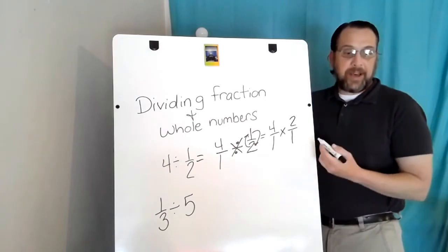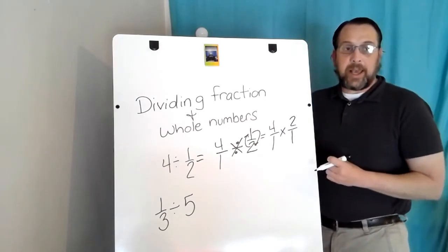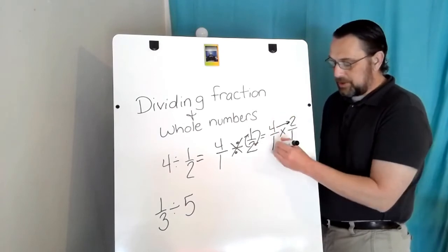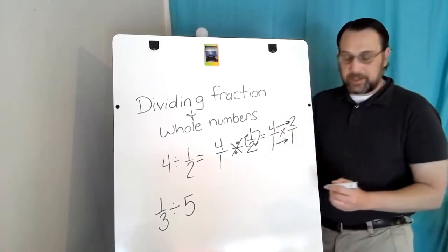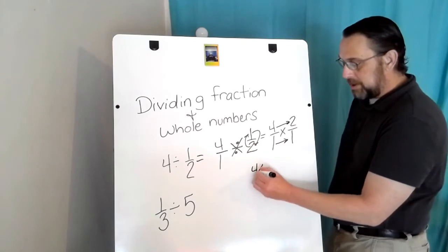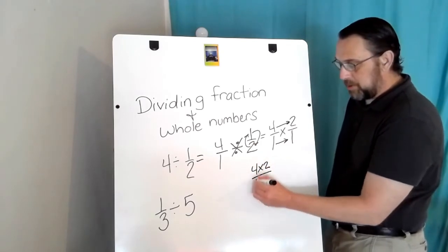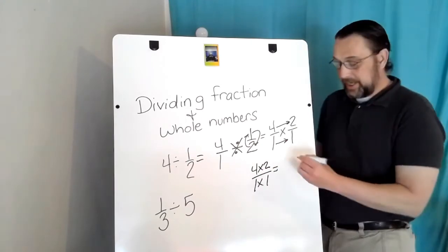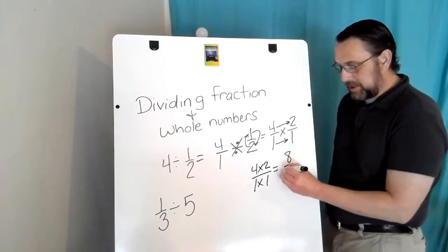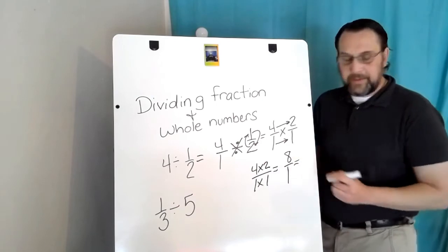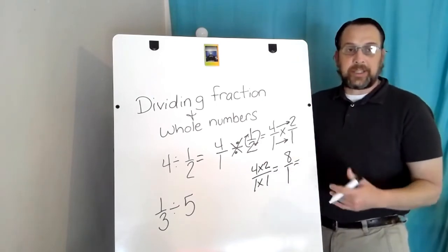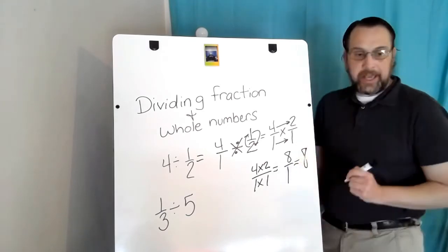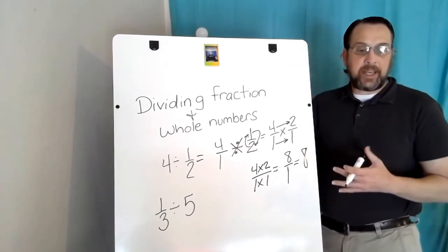Now we have a multiplication problem, and we solve multiplication problems by multiplying straight across: four times two over one times one. Four times two is eight, one times one is one. Any number over one will equal itself, therefore eight over one — the answer is eight.